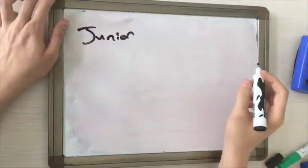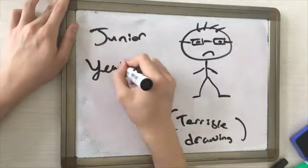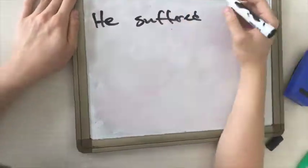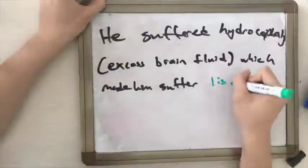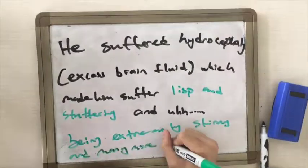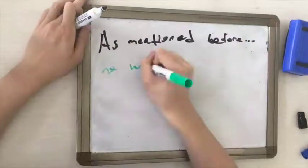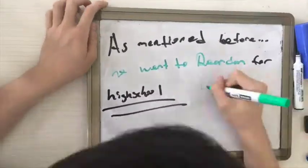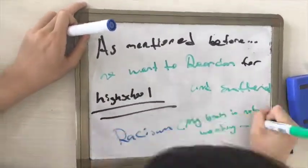And obviously the main, main character, Junior. He suffered from a brain problem, basically just meaning that he had too much fluid in his brain. And so he suffered a lot of physical ailments. But that did not stop him from being really good at basketball or getting really great grades.